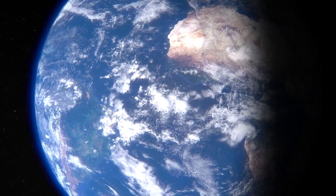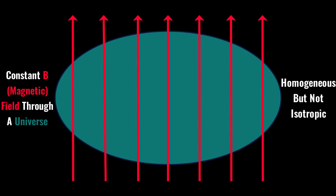Also, homogeneity doesn't necessarily imply isotropy. For example, a universe with a constant magnetic field is homogeneous, but it is not isotropic, as you could distinguish directions based on the direction of the magnetic field. Being isotropic about every point does imply homogeneity, however. Anyway, our universe is homogenous and isotropic.